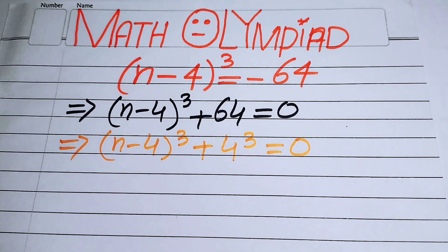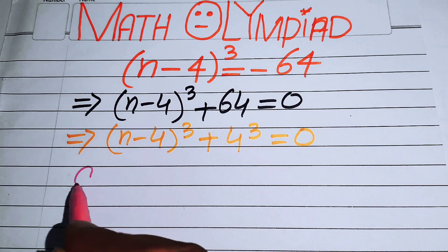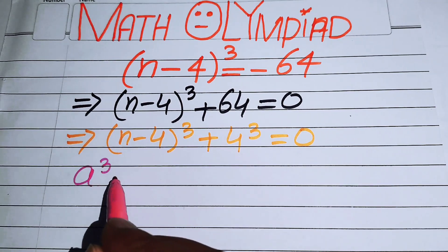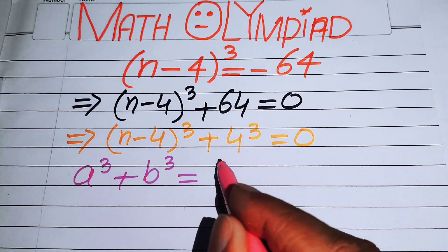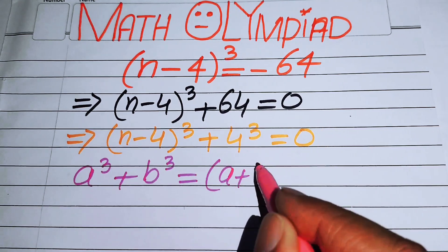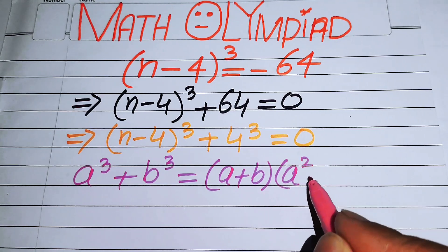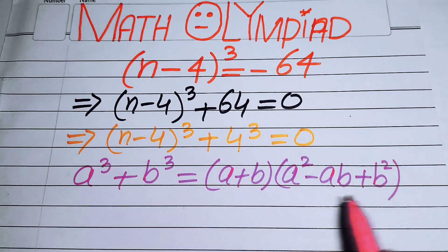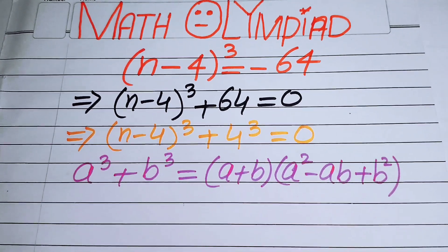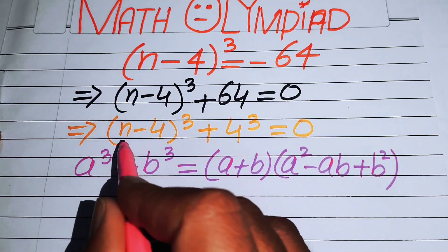Now focus on this equation — it looks like a cubic form. We will use the sum of cubes formula: a³ + b³ = (a + b)(a² - ab + b²). This is our nice cubic formula.